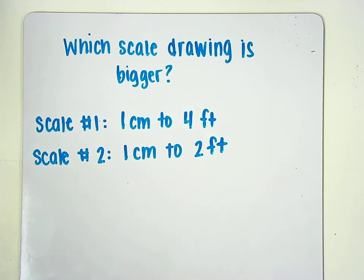So let's think about what these scales mean. Scale number 1 means that 1 centimeter on the scale drawing is going to represent 4 feet in real life. On scale number 2, 1 centimeter on the drawing is going to represent 2 feet in real life.